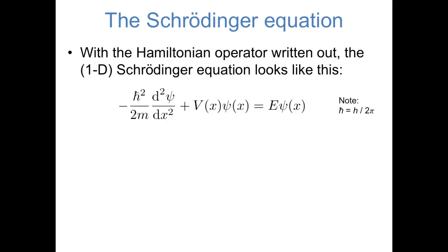When the Hamiltonian operator is written out, the Schrödinger equation looks more complicated. For a particle that exists in one dimension, the x dimension, the Schrödinger equation looks like this: negative h-bar squared over 2m times the second derivative of the wave function, plus some function v of x that we haven't specified yet times the wave function, equals e, the measured energy, times the wave function.